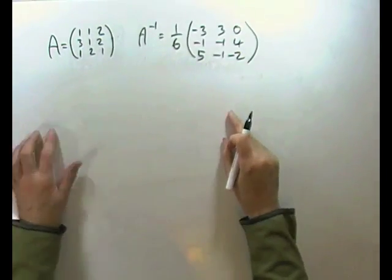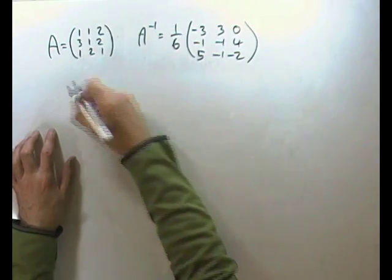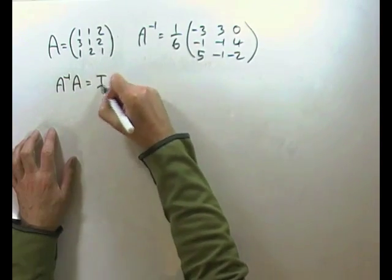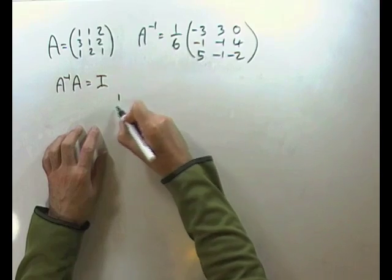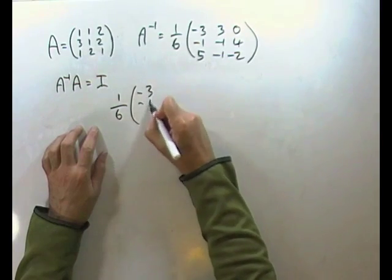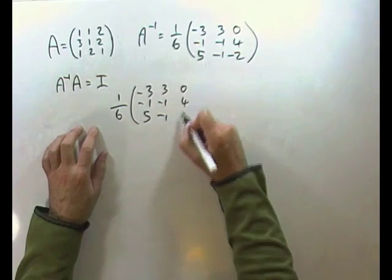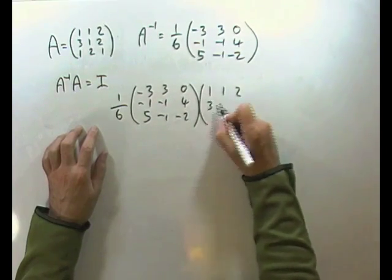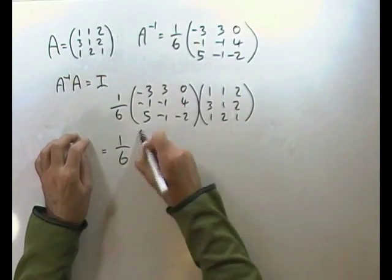Right, cleared the board, sorted that. A. Now, to check if that is in fact the inverse. If it is the inverse, then inverse of A times A should equal I. Well, does it happen? So, one sixth of negative three, negative one, five, three, negative one, negative one, zero, four, negative two, times one, one, two, three, one, two, one, two, one, should equal one sixth of matrix multiplication. Now, along the rows down the columns, negative three plus nine and nothing is six.